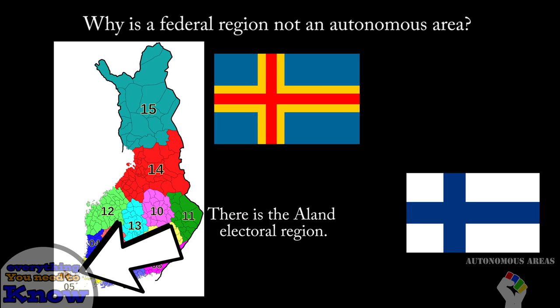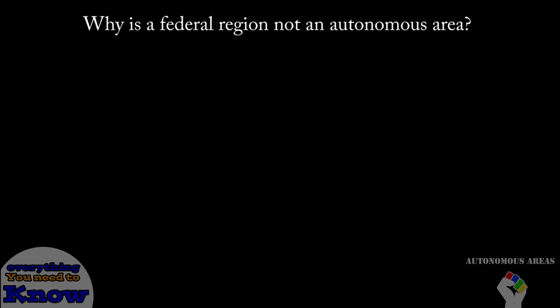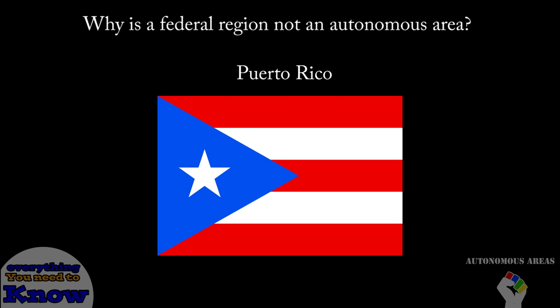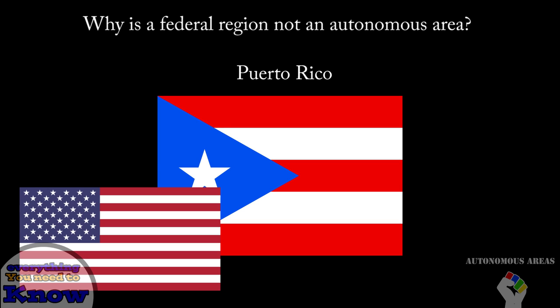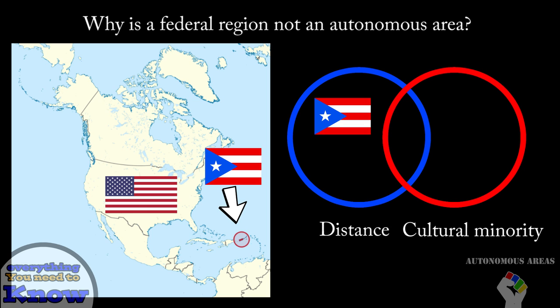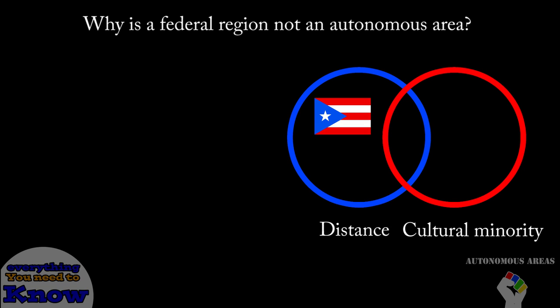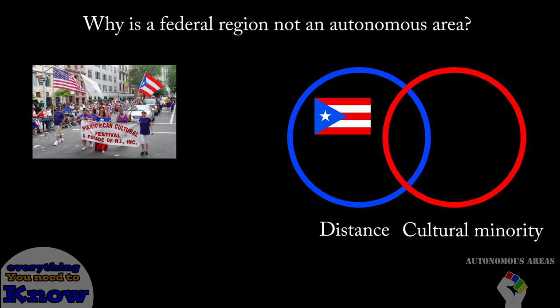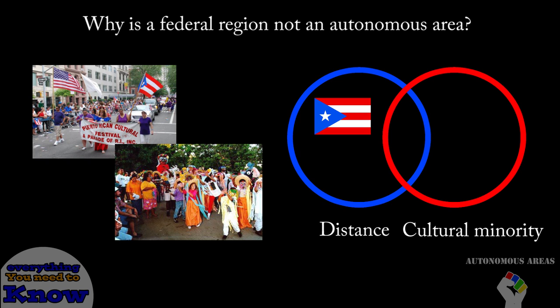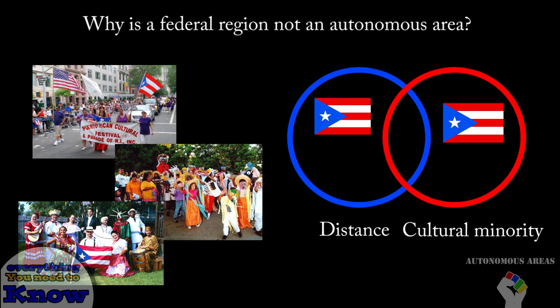This is more of a representative and symbolic reason though, so I will leave that aside. Now if we take Puerto Rico for example, Puerto Rico is seen as an autonomous area of the United States. Not only is it an island and adheres to the geographical distance clause, it also has a very different cultural background compared to the rest of the United States. Puerto Rican culture is closely related to Latin American and Spanish culture, which conflicts with the North American culture seen in the rest of the country.